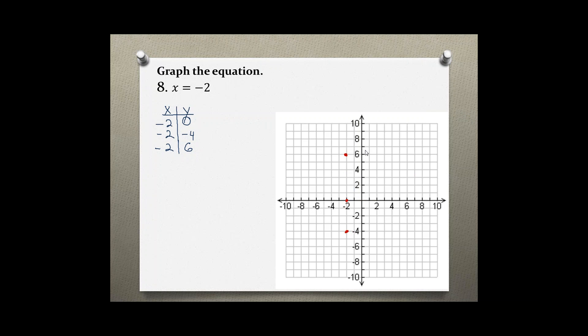If I connect 3 points, you might notice why this line, and it's supposed to be a straight line, I'm sorry, why this line is called a special case. It is a vertical line. And the equation of a vertical line always starts with x and is equal to some kind of value.